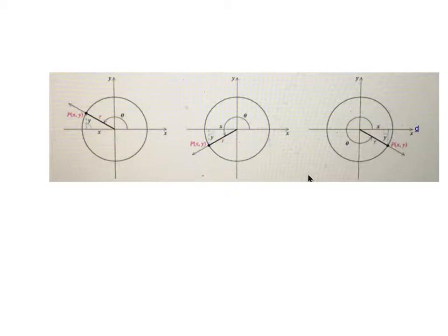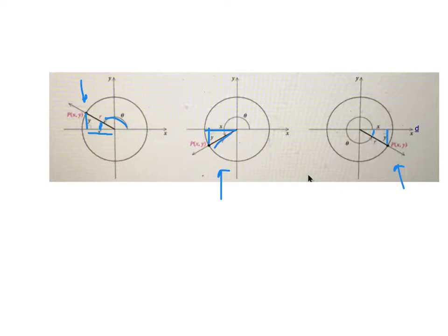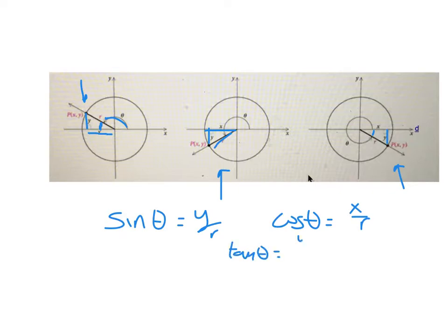It doesn't matter which quadrant the point is in. In quadrant 2, x is still the adjacent side and y is still the opposite side. In quadrant 3, x is still the adjacent side, y is still the opposite side, and R is still the radius — the hypotenuse — with R squared equals x squared plus y squared. Same in quadrant 4. Sine is y over r, cosine is x over r, and tangent is always y over x. R is always x squared plus y squared equals R squared.